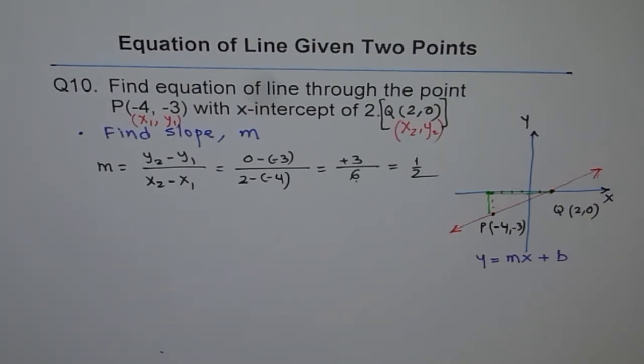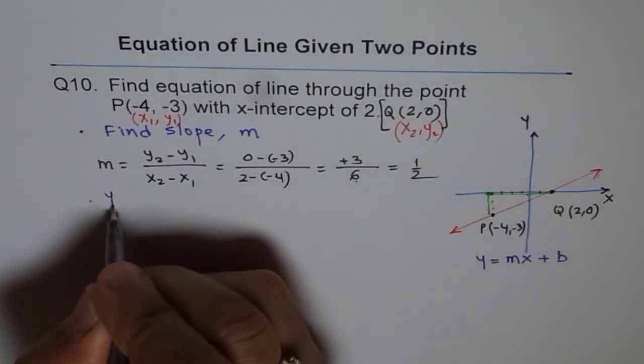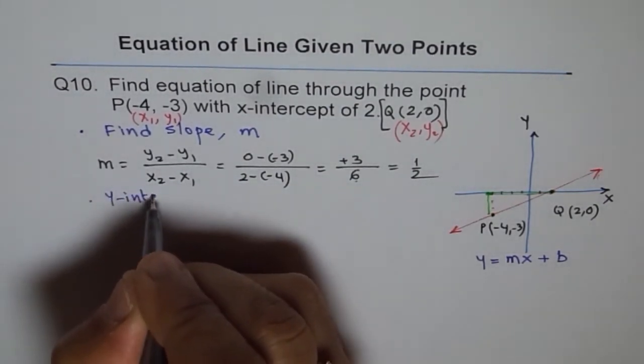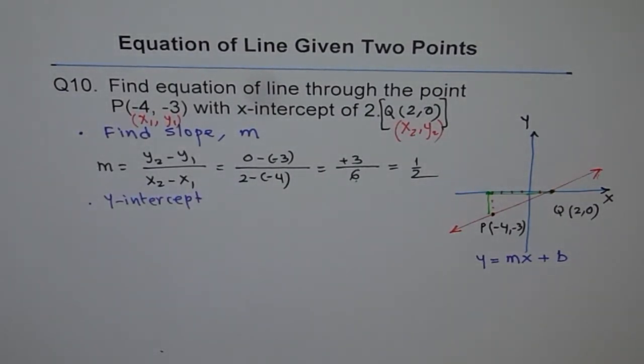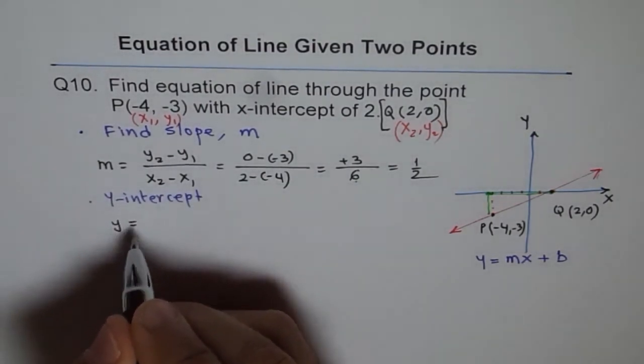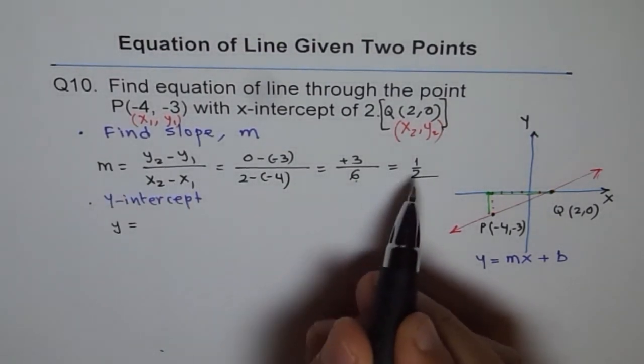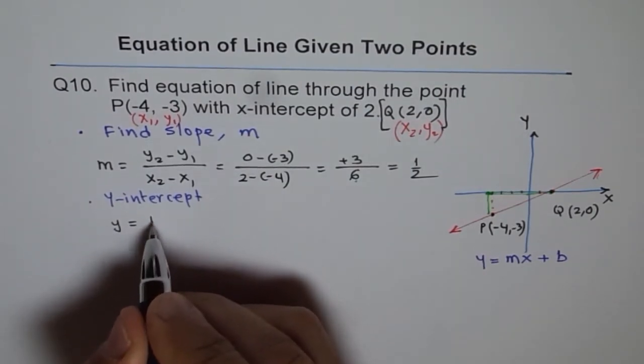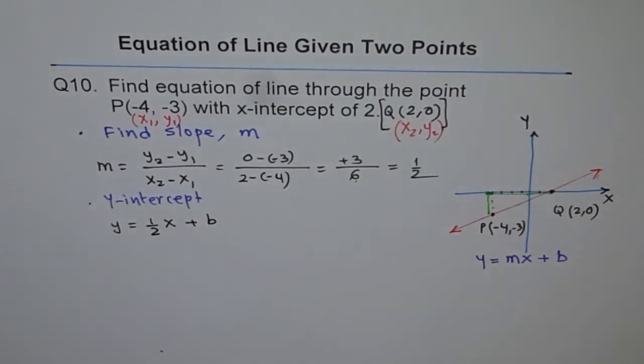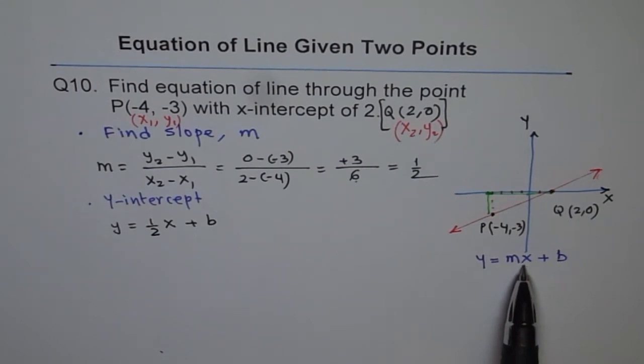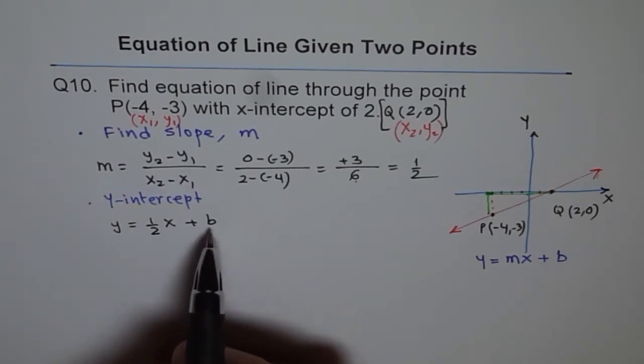Once you get the slope, then the second step is to find y-intercept. So let's rewrite our equation. So we'll rewrite our equation as y equals to m. And now we know the value of m, which is half. So we'll write half instead of m, half x plus b. So we have gone one step ahead. Since we have found m, we substituted the value for m, which is half for us. And now we need to find what b is.